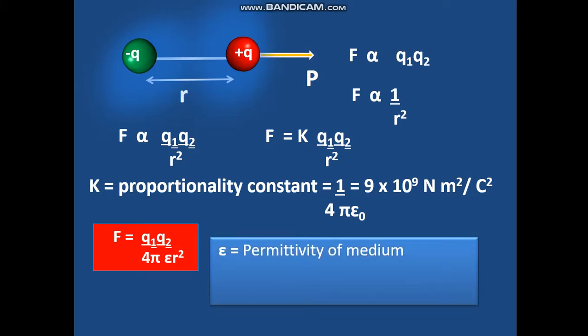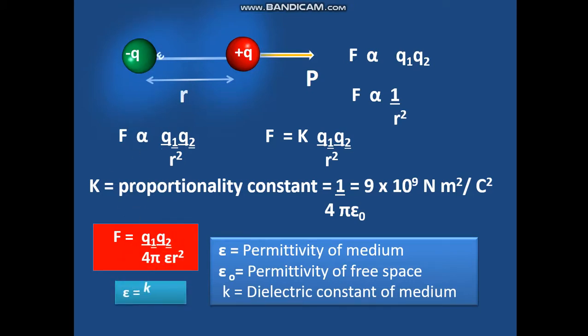Epsilon is the permittivity of a medium. Permittivity implies allowance - how much it allows. Epsilon naught is the permittivity of free space. K is the dielectric constant of the medium, where K equals epsilon over epsilon naught. So epsilon is K times epsilon naught.